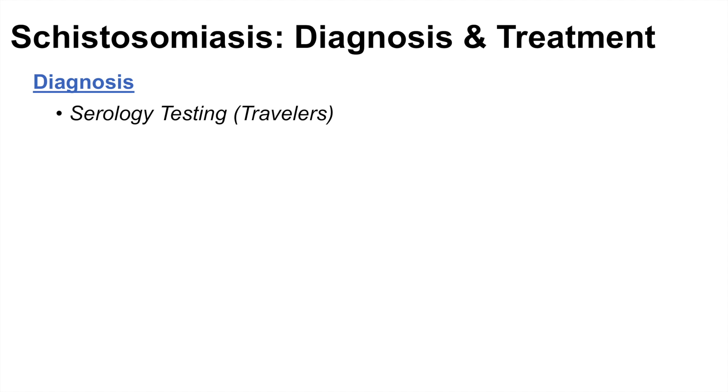Now that we know some of the symptoms of schistosomiasis, how can we definitively determine if it is schistosomiasis? It's important to ask travelers what countries they've traveled to and whether they've been wading through open waters in affected regions. For diagnosis, it's important to check serology — looking for antibodies, particularly in travelers — perform a urinalysis, since some species release eggs in the urine, do a stool exam, and perform PCR to check for parasite genetics.